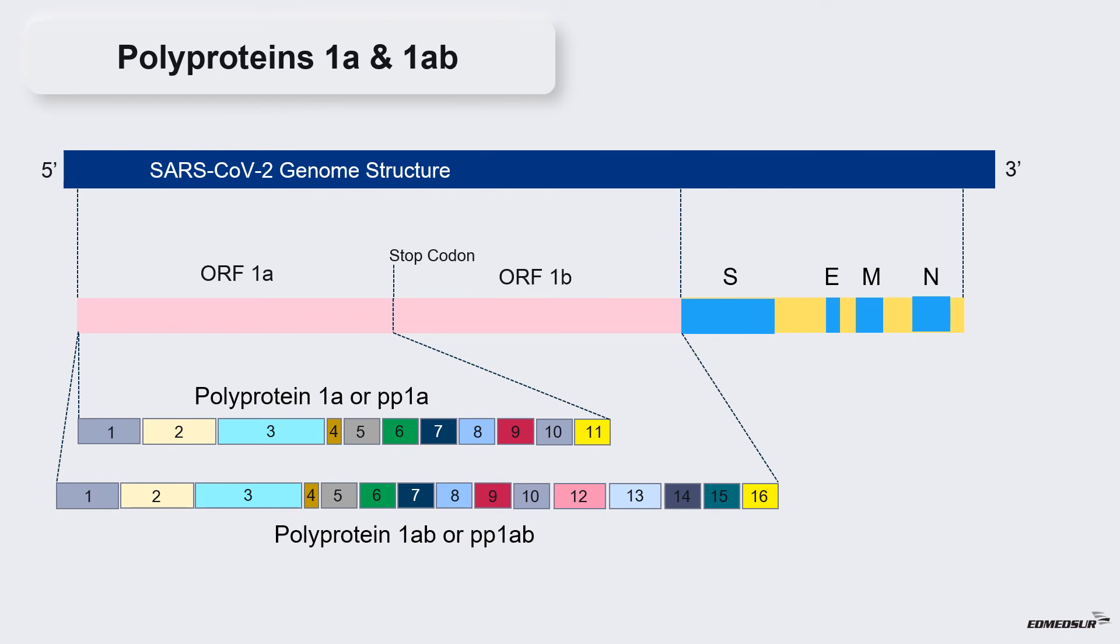The polyprotein PP1ab is produced because the stop codon at the end of ORF1a is skipped by the ribosome due to programmed ribosomal shifting.